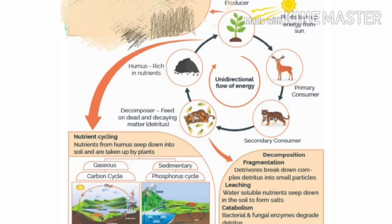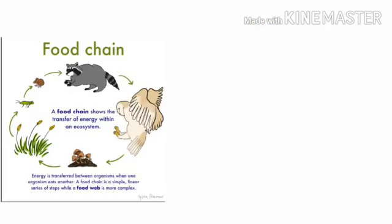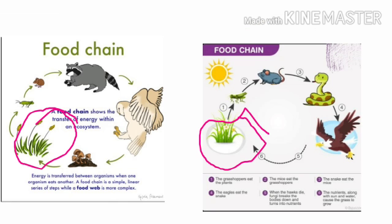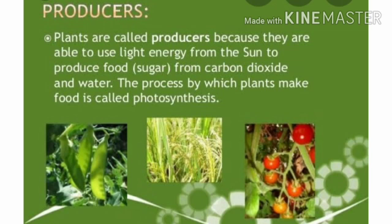A food chain has the following features: every food chain begins with green plants, as they are the producers. Producers get their energy from the sun and other nutrients from the soil and air.